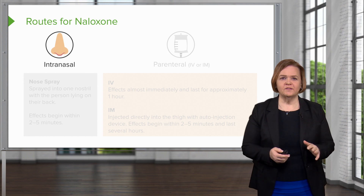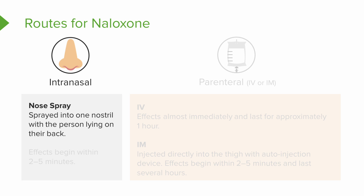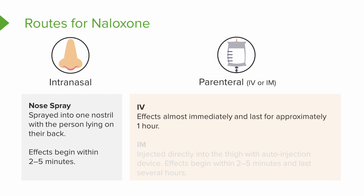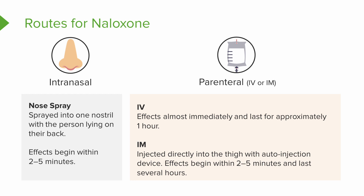The routes we can give naloxone — this is really cool. You can give it intranasally, meaning anyone can give it as a nose spray. Spray it in one nostril with the person lying on their back; in about two to five minutes you'll start to see the effect. EMTs, first responders, police officers, or even family members of people with drug addiction can carry a nose spray. IV or IM has to be given by someone trained. IV effects take effect almost immediately but only last about an hour, so you may need more than one dose. You can also use an auto-injection device directly into the thigh, similar to an EpiPen — that kicks in in about two to five minutes and lasts several hours.